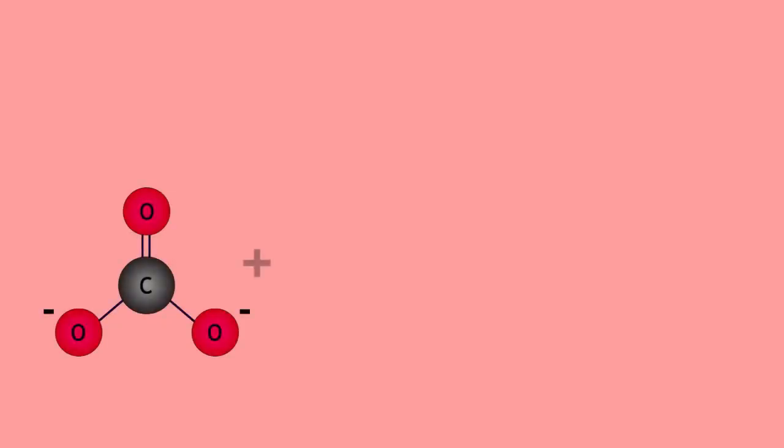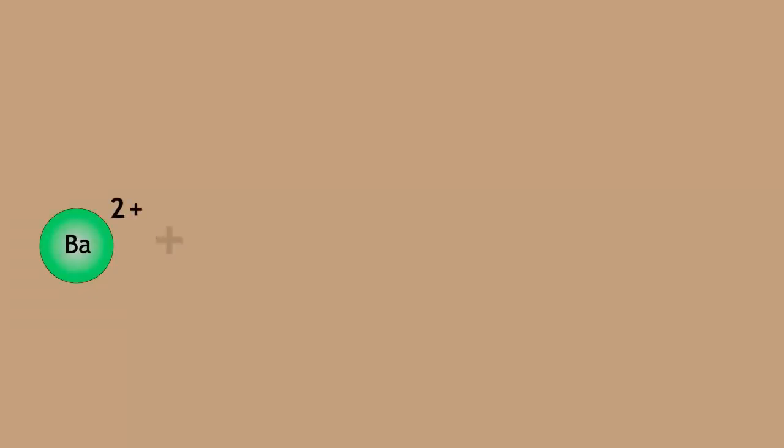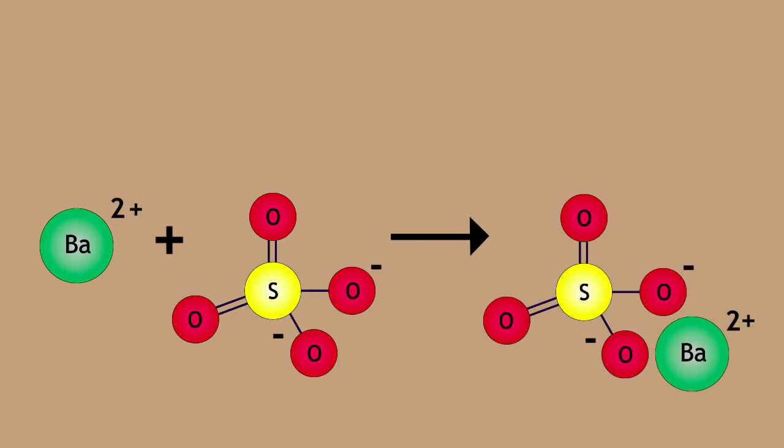Carbonate ions react with acid to produce carbon dioxide gas and water. Barium ions and sulfate ions combine to produce a barium sulfate precipitate.